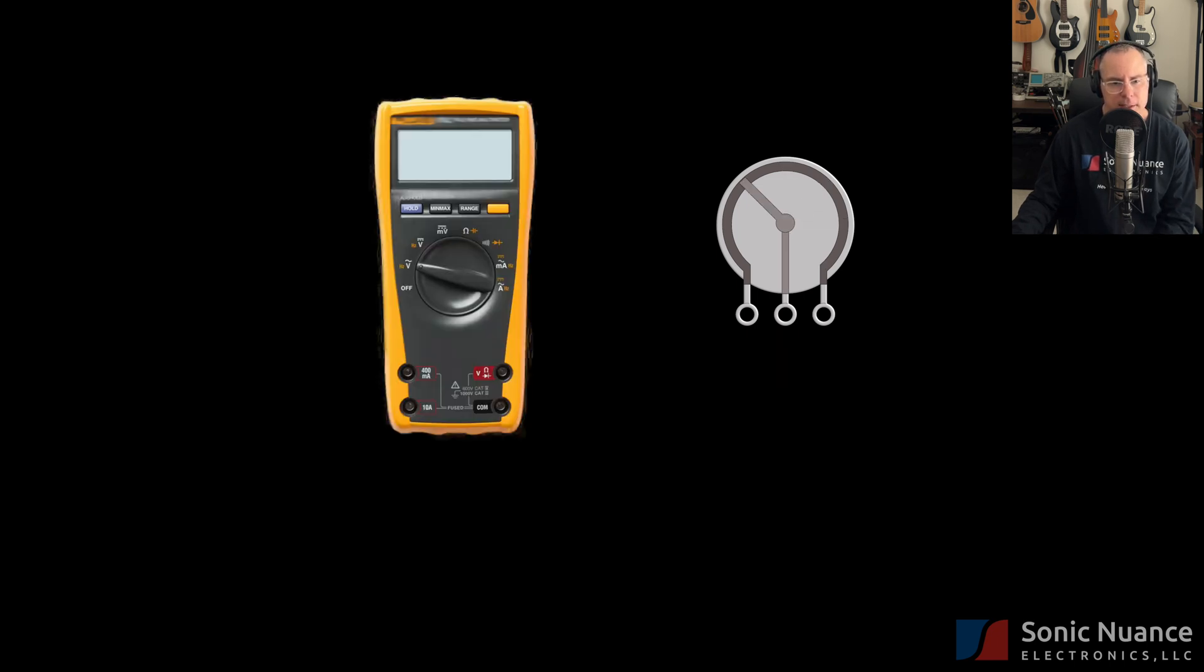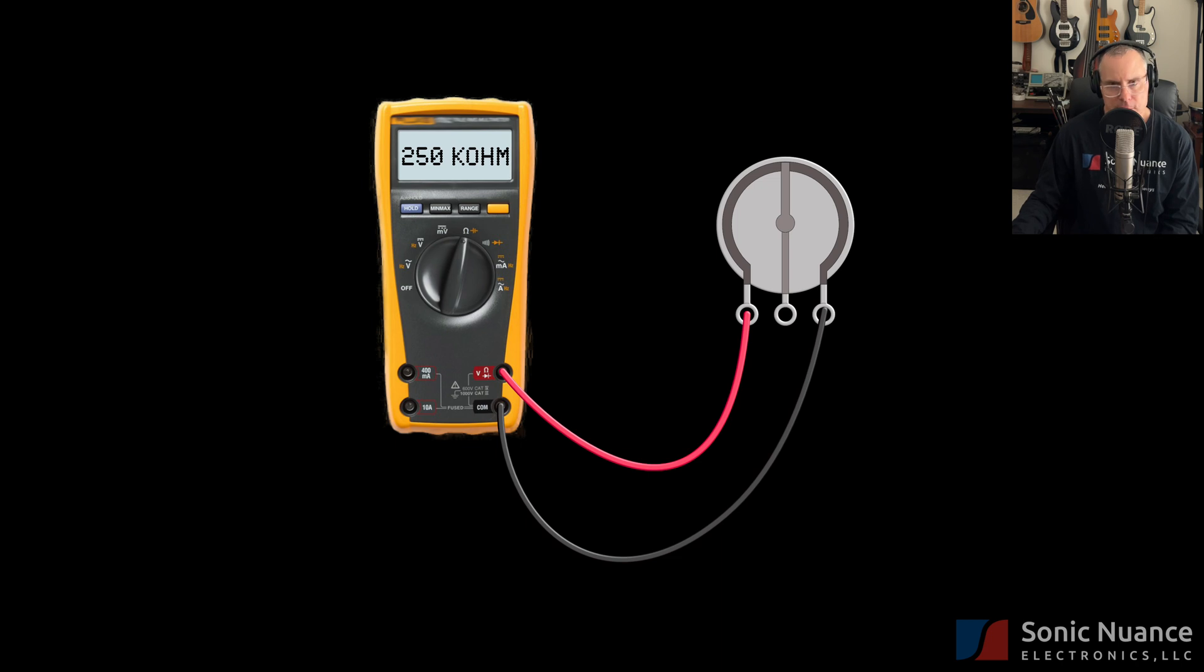here we have our DMM again, and we have it set up to measure resistance. What we have here is a 250k ohm potentiometer. And that number 250k represents the maximum value between the wiper and either of the terminals. Or you could also think of it as the value between the two outer terminals. So it's the maximum resistance of the potentiometer.